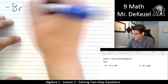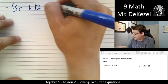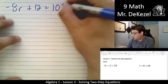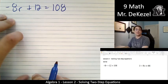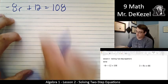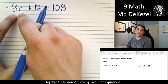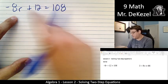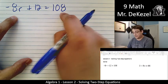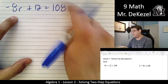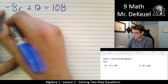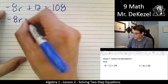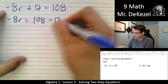Minus 8r plus 12 equals 108. To start, I want to get this part of the term on its side all by itself. So I'm going to move the positive 12 over. I'm going to subtract it. If it's positive on this side, I'm subtracting it from the other. So minus 8r equals 108 minus 12.